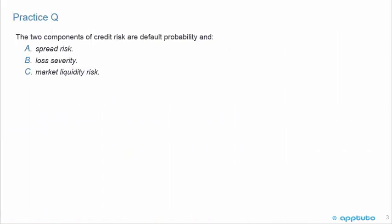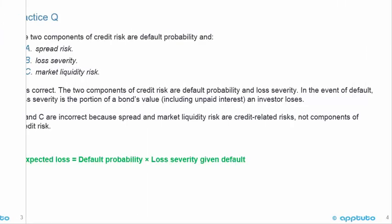Quick little practice question to check our understanding. The two components of credit risk are default probability and: A. Spread risk, B. Loss severity, or C. Market liquidity risk. That should be a fairly easy one — I highlighted in bold what we saw in the first slide. Expected loss equals default probability times the loss severity given default. So B is correct. The two components of credit risk are default probability and loss severity.